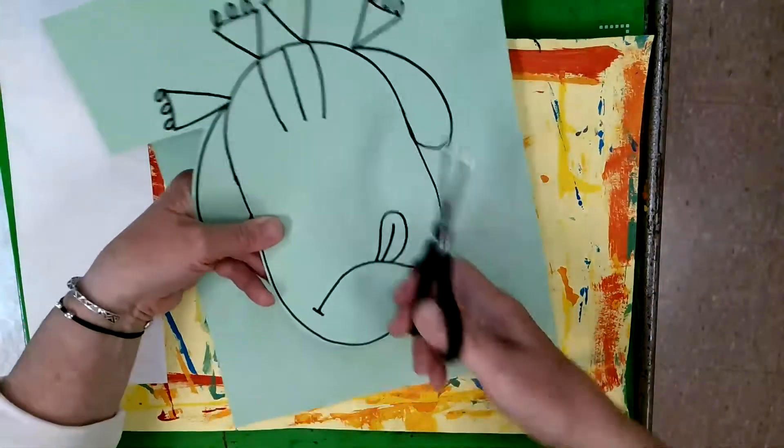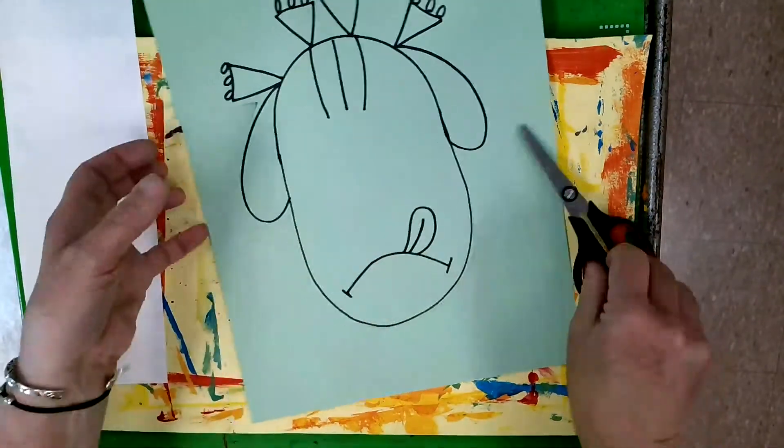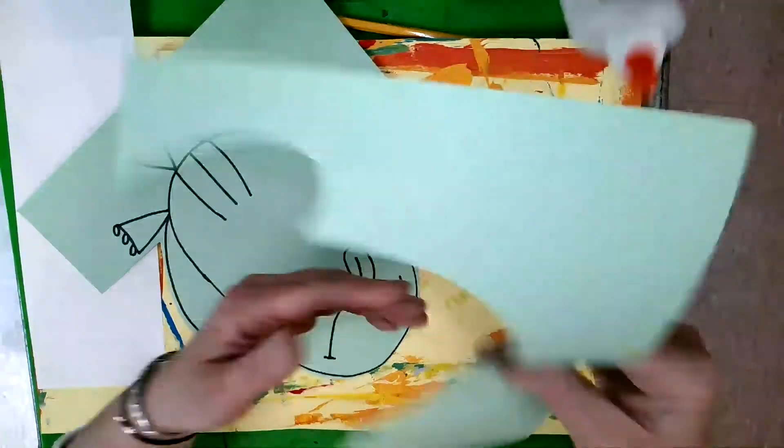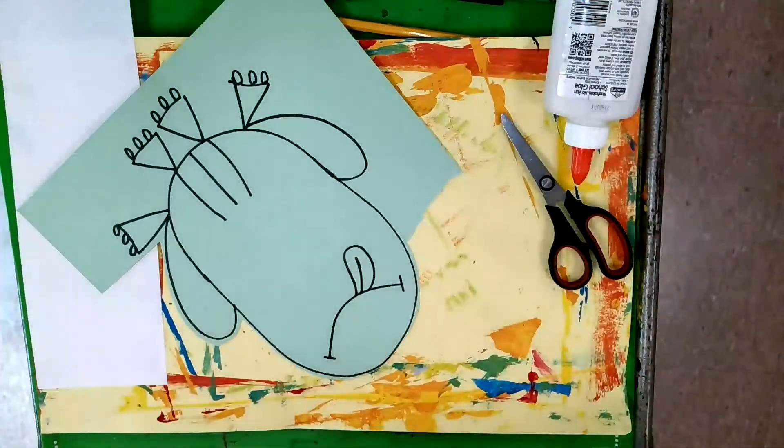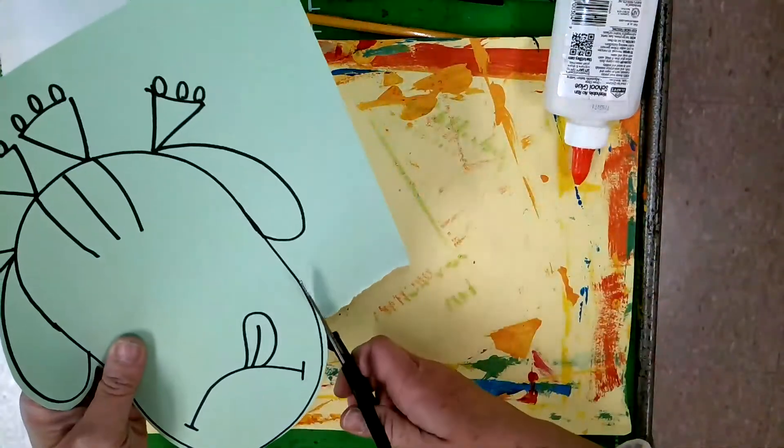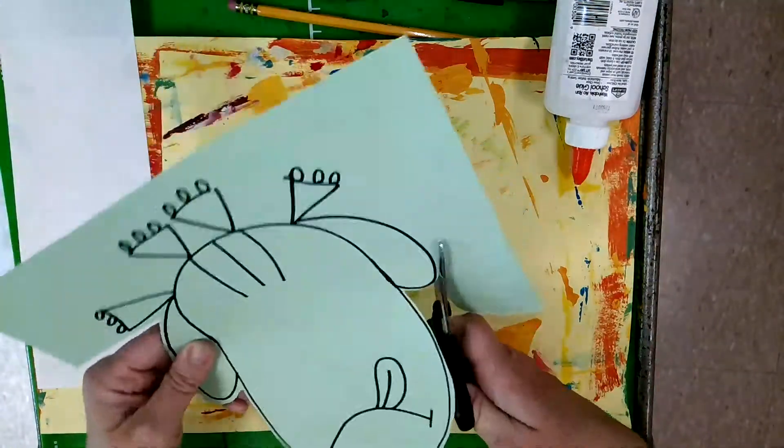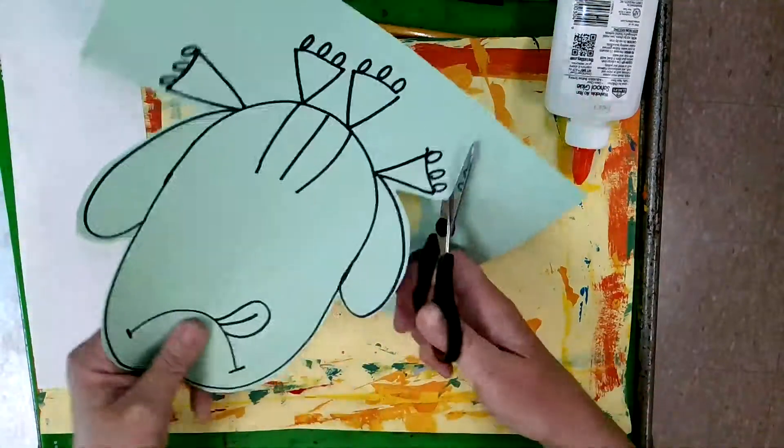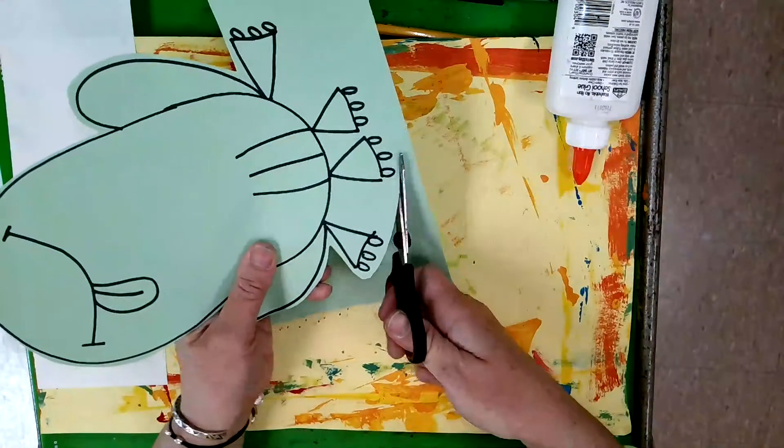Notice how I'm turning the paper as I cut. This is helpful too. Instead of trying to turn my hand as I cut, turn the paper as you cut. Keep your hand in one place with the thumb in the air. If this gets to be too much here, I'm just gonna take that chunk off. I might use this for another art project, that's still a good piece of paper. I'll put that in my scrap box and I'm going to finish coming around here.